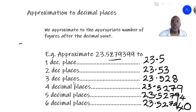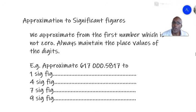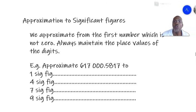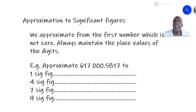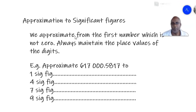That's decimal places. Now let's go on to significant figures. Make sure you understand the difference between approximation to decimal places and significant figures. When you approximate to significant figures, we start from the first number that is not 0 — not like decimal places where we start from the first number after the point. An important rule here is that you must always maintain the place value of the figures in your answer.